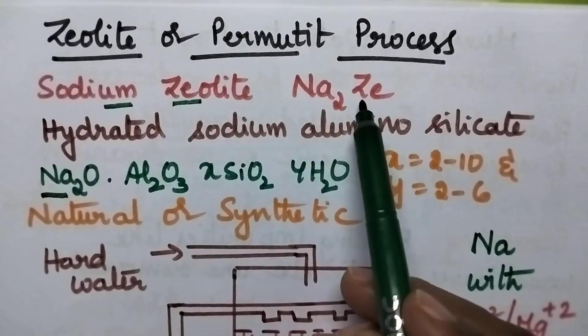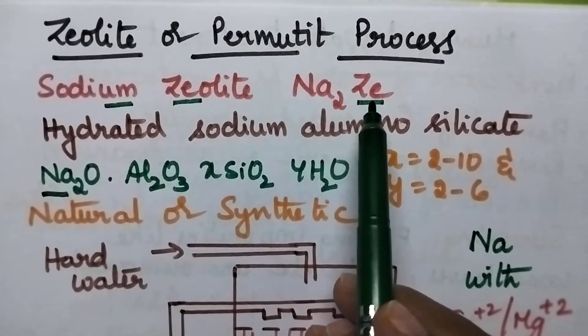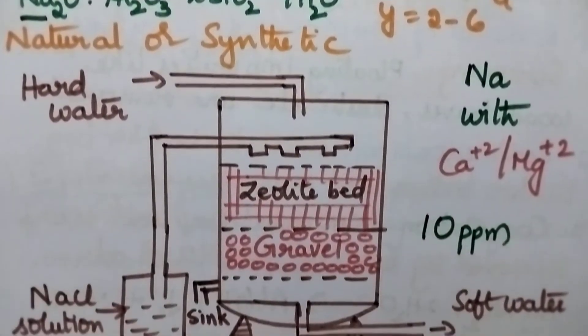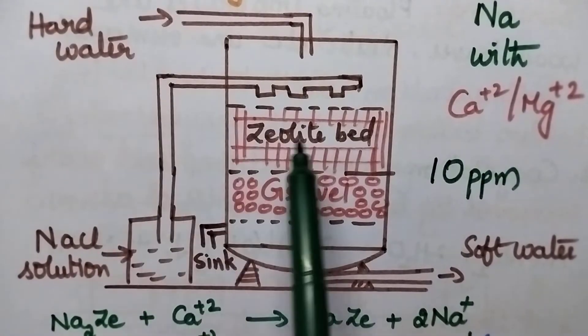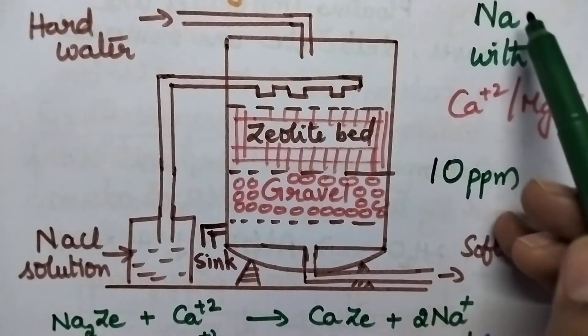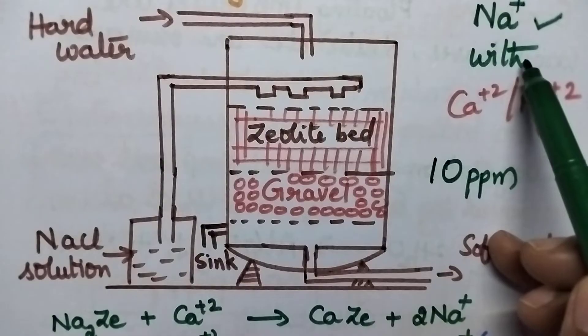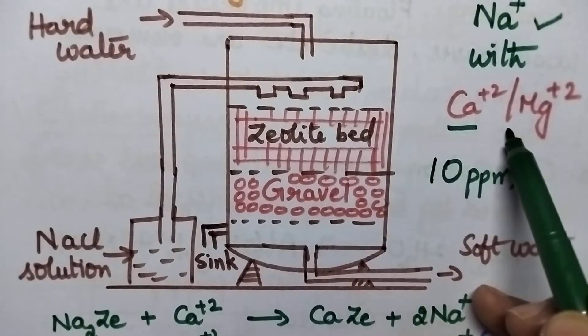Hence simply it can be called as sodium zeolite and simply it can be represented as Na2Ze. So coming to the zeolite process, in this process generally hard water is passed through the zeolite bed. Then this zeolite bed is capable of exchanging its sodium ions with hardness producing cations such as calcium and magnesium.